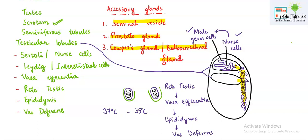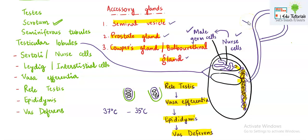After formation, sperms come into the rete testes. After rete testes the secretion comes into the vasa efferentia, from vasa efferentia it goes into the epididymis, and from epididymis it goes into the vas deferens. All these terms and their connections should be learned. In the vas deferens, the sperms are not yet functional — they will become functional when the secretion from the accessory glands mixes with the sperm to form semen.